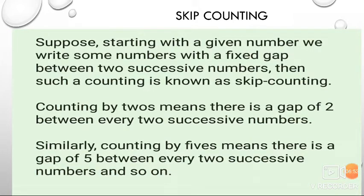Now, moving towards our next topic: skip counting. Suppose, starting with a given number, we write some numbers with a fixed gap between two successive numbers — such counting is known as skip counting. Counting by 2s means there is a gap of 2 between every two successive numbers. Similarly, counting by 5s means there is a gap of 5 between every two successive numbers, and so on. Here are some questions for you.